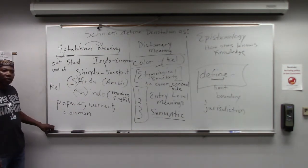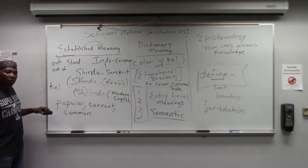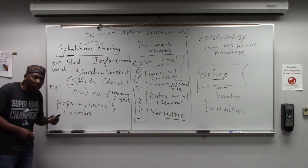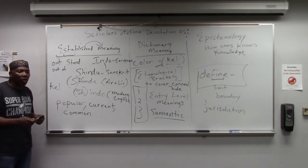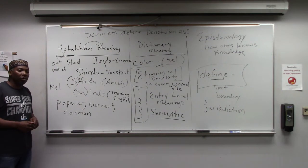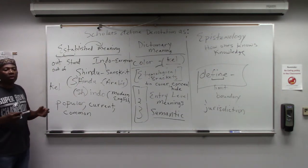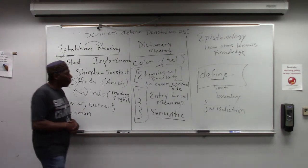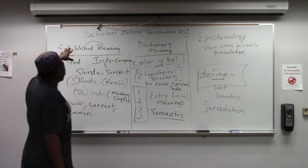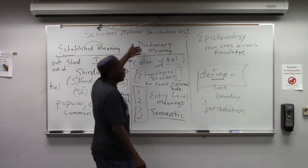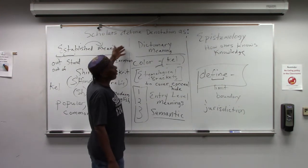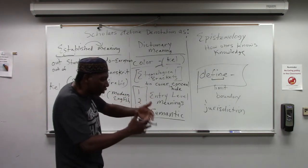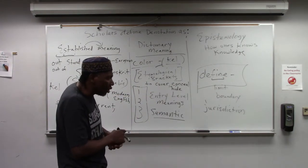Nothing to do with light, nothing to do with the light spectrum, nothing to do with crayons — 'what color is this?' That's a popular meaning, or connotation. So those dictionary entries are misleading, because scholars are defining denotation as the dictionary meaning.